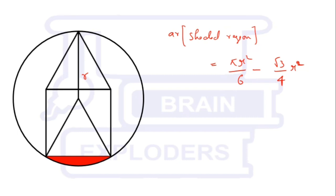Now since we are interested in calculating the fraction, the required fraction equals this area (πr²/6 - √3/4 × r²) divided by πr², which is the area of the whole circle. This comes out to be 1/6 - √3/(4π), which is approximately equal to 0.0288.